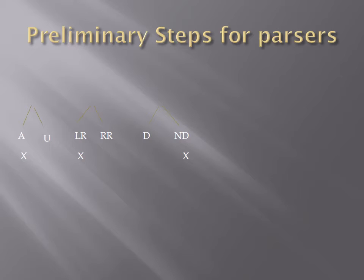A parser has two types: the first is top-down and the other is bottom-up. The preliminary steps for a parser require that the grammar should be unambiguous. As shown in the diagram, a grammar can have three types: ambiguous or unambiguous; left recursive or right recursive; and deterministic or non-deterministic.